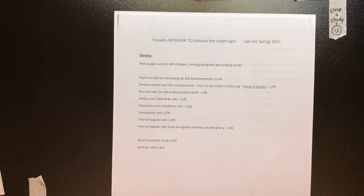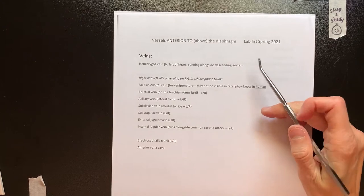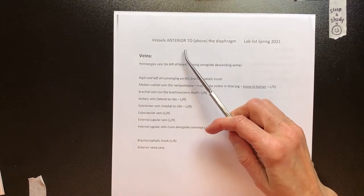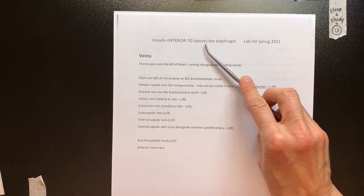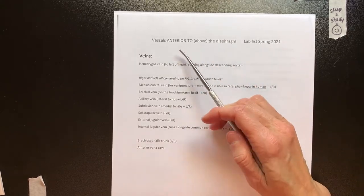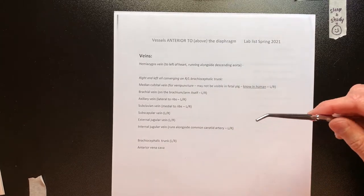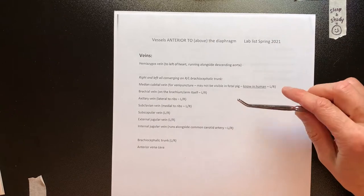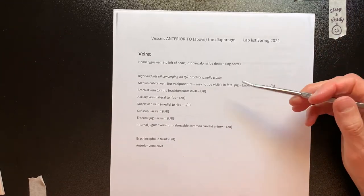Let's talk about the fetal pig vessels that you'll see in dissection. We're using the lab list for this spring, and the vessels we're going to talk about first are the ones anterior to or above the diaphragm. In humans, they would be above the diaphragm. In fetal pigs, they'll be anterior to, because fetal pigs are quadrupeds, so anything closer to the head is considered anterior to or above the diaphragm.